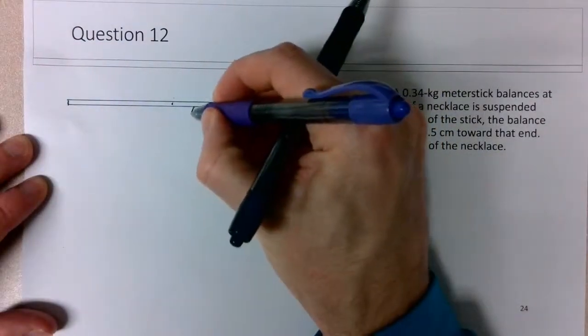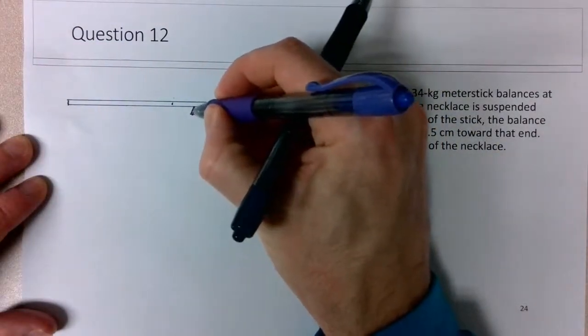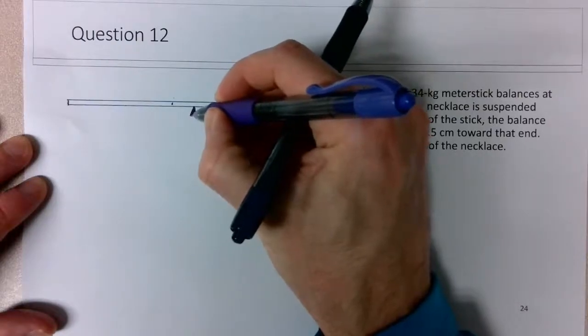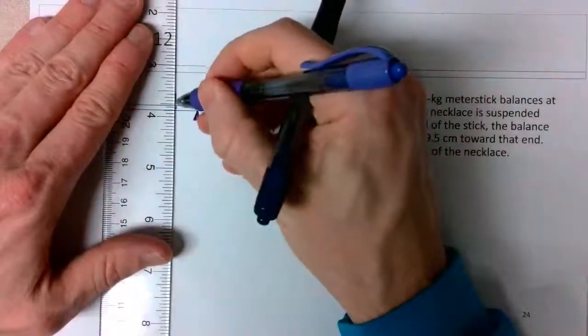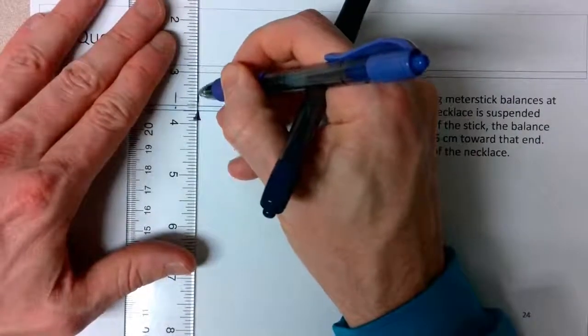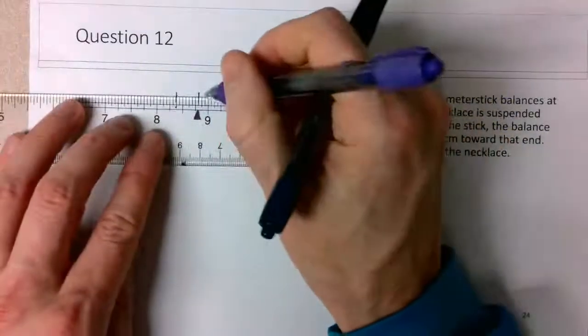So if we have like a pivot point here, like a sort of fulcrum, this would be the new balance point, where I know that this particular distance here is 9.5 centimeters.